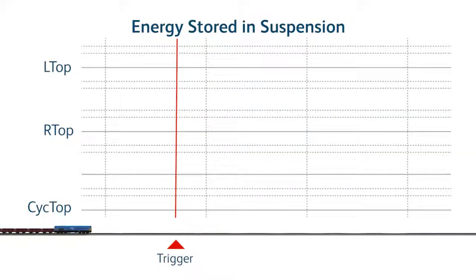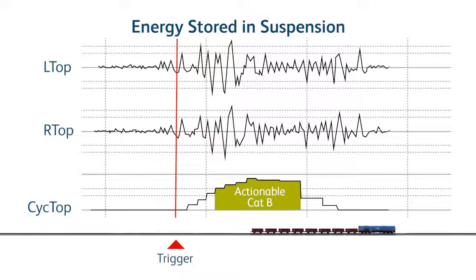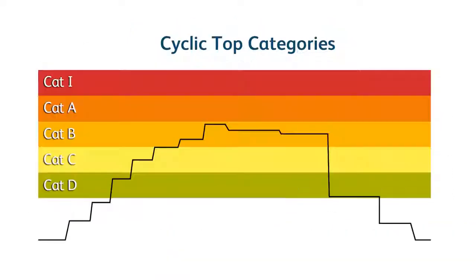Cyclic top is a theoretical value calculated by the TRV to represent the amount of energy potentially stored in the suspension and is only reported when the value reaches a predetermined threshold and are categorised from CAT I to CAT D.